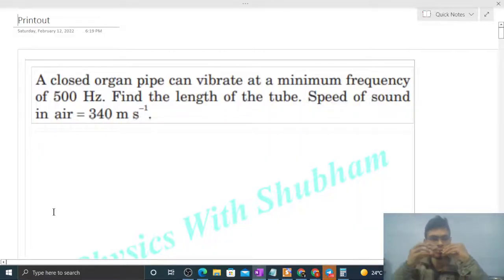Okay, hi everyone. So today let's discuss one interesting problem. It says a closed organ pipe can vibrate at a minimum frequency of 500 Hertz. Find the length of the tube. Speed of sound in air is 340 meter per second.